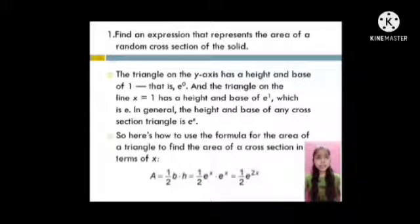The first step is find an expression that represents the area of a random cross section of the solid. The triangle on the y-axis has a height and base of 1, that is e raised to 0. And the triangle on the line x equals 1 has a height and base of e raised to 1, that is e. In general, the height and base of any cross section triangle is e raised to x. So here is how we use the formula for the area of a triangle to find the area of a cross section in terms of x: A equals half b times h equals half e raised to x times e raised to x equals half e raised to 2x.